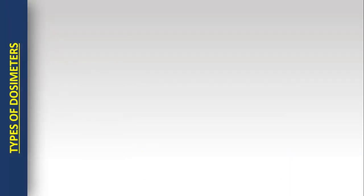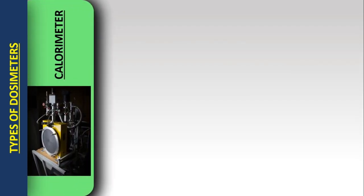Moving forward to the types of dosimeters. First we have the calorimeter. A calorimeter is a device used to measure the change in temperature. The basic assumption is that when an object is irradiated, all the absorbed dose will appear as heat. So the measurement of temperature change refers to the measurement of absorbed dose.